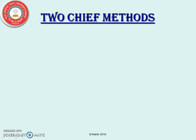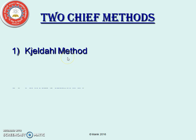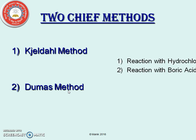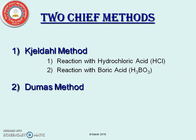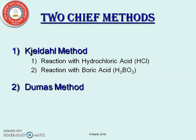There are two chief methods for estimation of nitrogen: Kjeldahl's method and Dumas method. Kjeldahl's method can be further divided into two reactions: reaction with hydrochloric acid and reaction with boric acid.